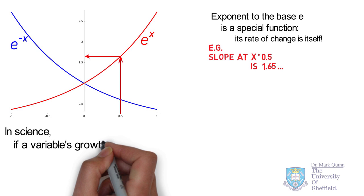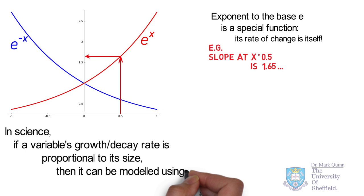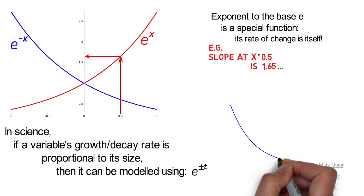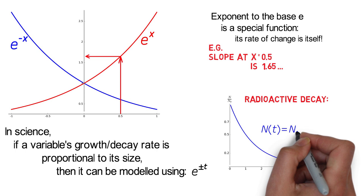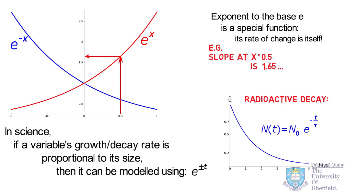In science, if a variable's growth or decay is proportional to its size, then it can be modeled using the function e to the power of plus or minus t, giving exponential decay or increase of some population. For example, in physics we have radioactive decay, where it's the population of radioactive particles decaying with some time constant tau.